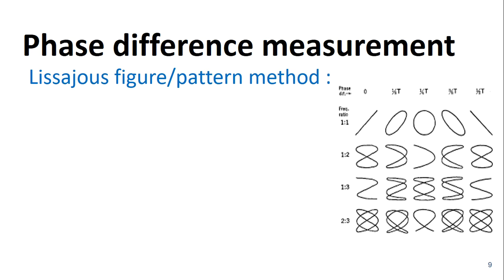Here you can observe different shapes of the Lissajous figures. These shapes depend on the values of phase, frequency, etc. The exact configuration of the pattern depends upon the ratio of the frequencies and the relative phase of the two signals.